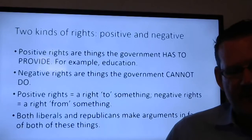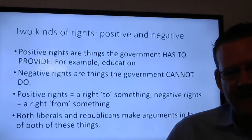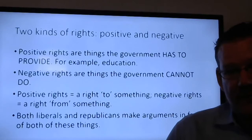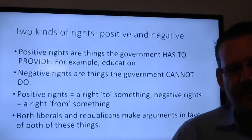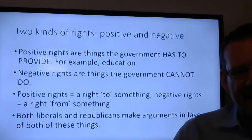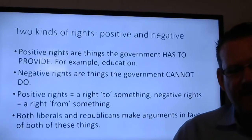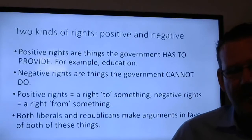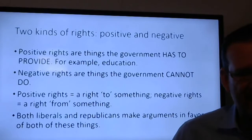If we're in a parliamentary system with proportional representation, parties and ideology would overlap much more tightly. There are two kinds of basic rights: positive and negative rights. Positive rights are things the government has to provide to you, like an education or a lawyer if you can't afford one. Negative rights are protections — things the government cannot do. A positive right is a right to something; a negative right is a right from something — the government cannot force me to do X.